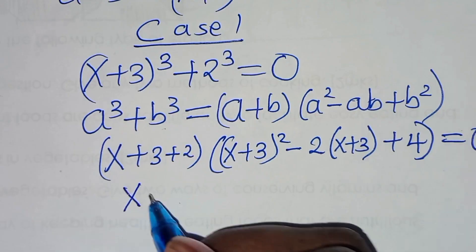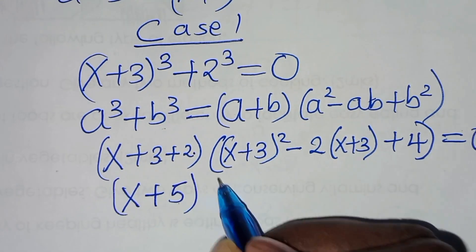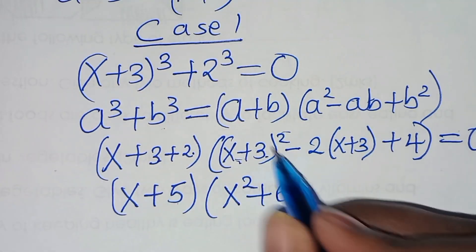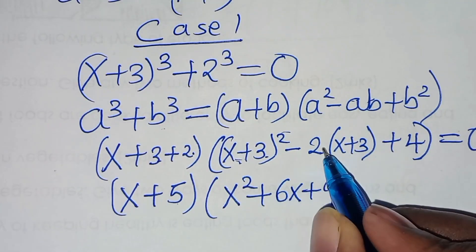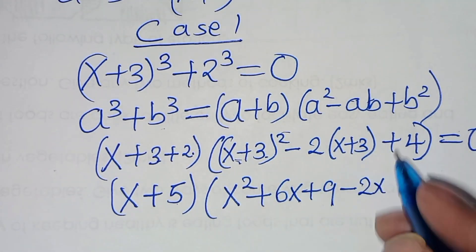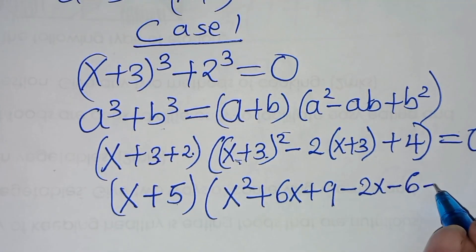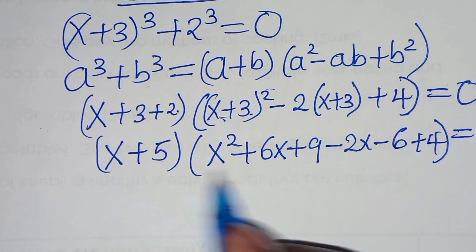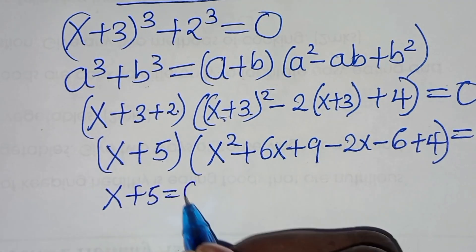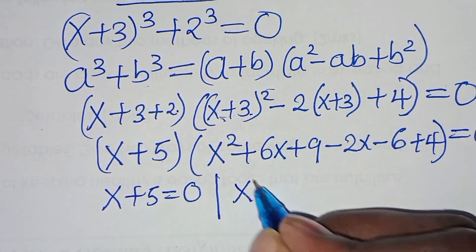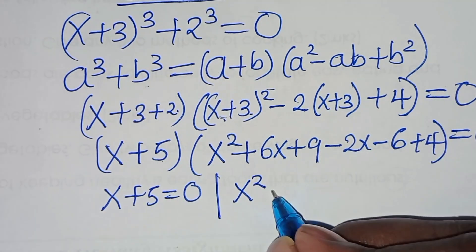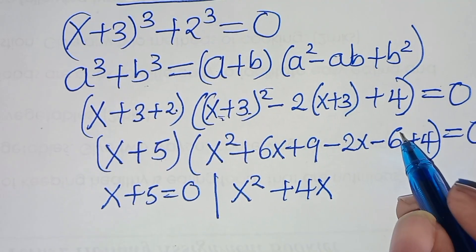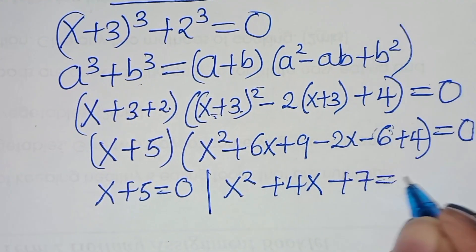We have x plus 3 plus 2, which is 5. Then x plus 3 squared can be expressed as x squared plus 6x plus 9, subtract 2 times x which is 2x, minus 2 times 3 which is 6, then plus 4, this is equal to 0. So we have two parts: the first part is x plus 5 equals 0, and the second part is x squared plus 4x plus 7 equals 0.